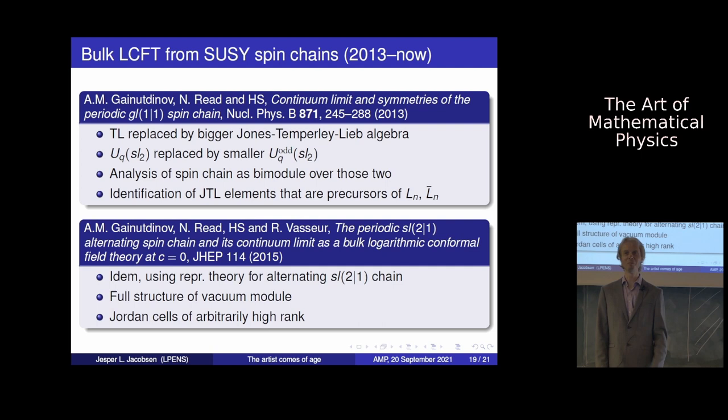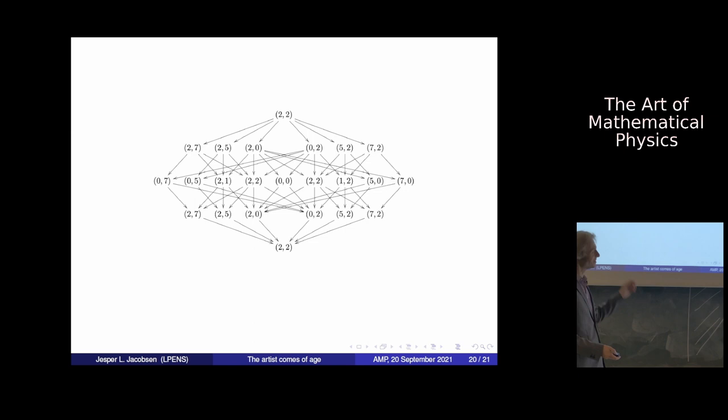Two years later there was another paper about the periodic alternating SL(2|1) spin chain. The idea is to build on representation theory to find out what's going on in the continuum limit. They predict the full structure of the vacuum module. A quite recent paper finds a possibility of having Jordan cells of arbitrarily high ranks. Things are really complicated. It's all about quotients of module structures, algebraic in certain directions. There are all these representations being glued together. There are logarithms every time things are glued. It's really, really complicated.